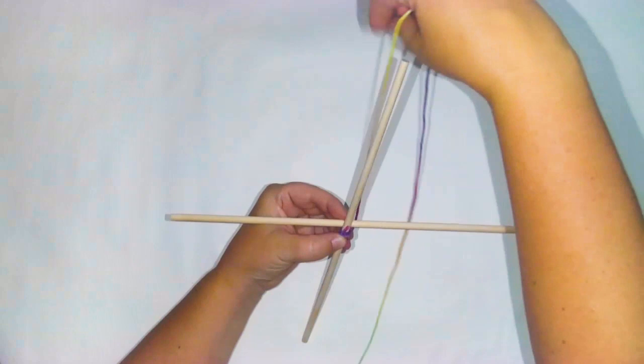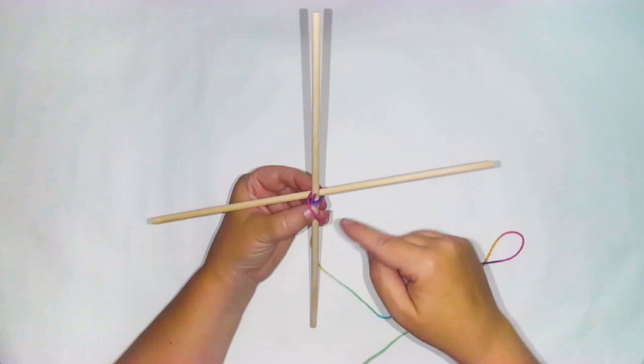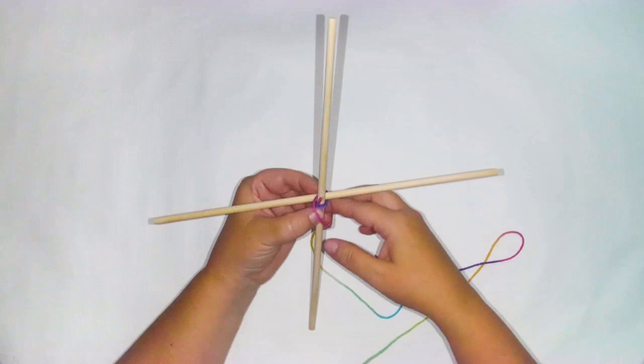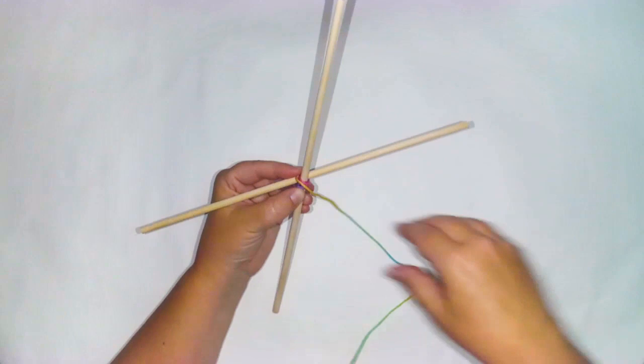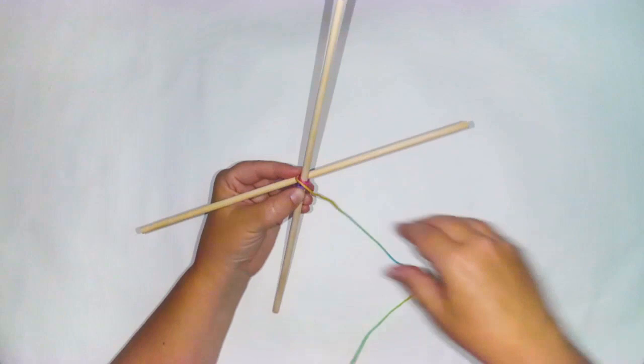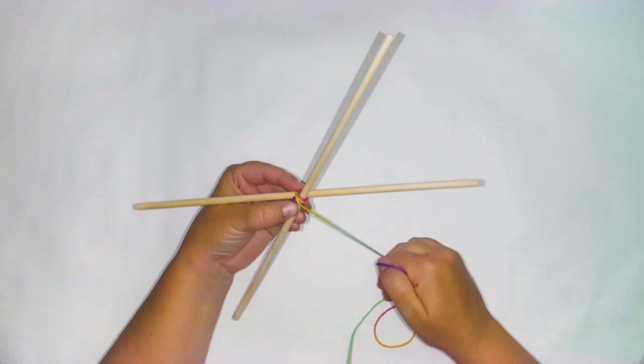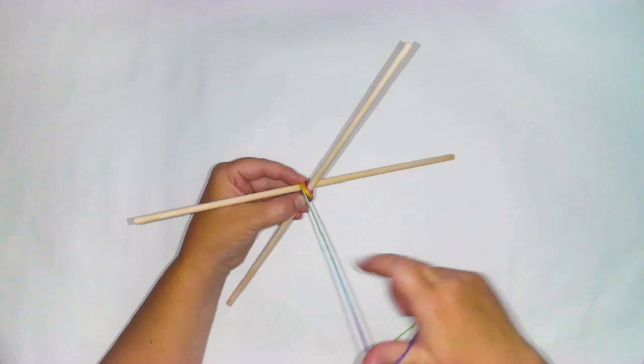Now you're going to take the yarn and start by going underneath and wrapping around diagonally. I came down and up and I'm going to wrap around diagonally, pulling your yarn taut as you go. I'm going to go around maybe five times. Doesn't need to be super exact. You can see my dowels have shifted, so I can fix that.